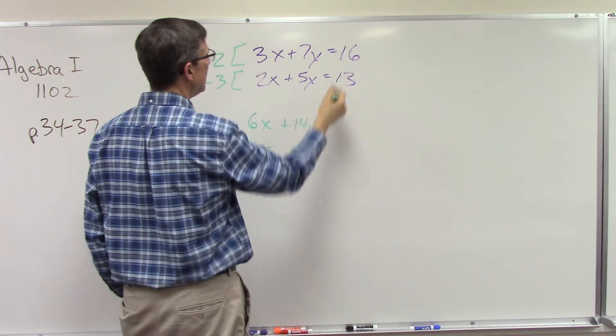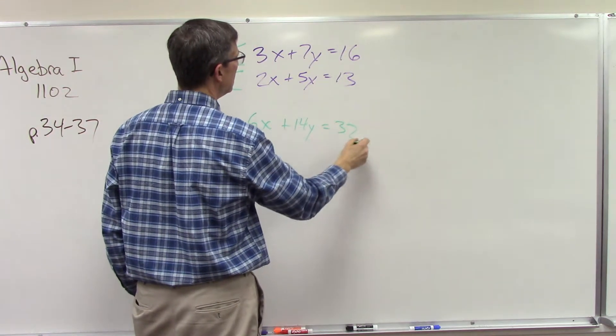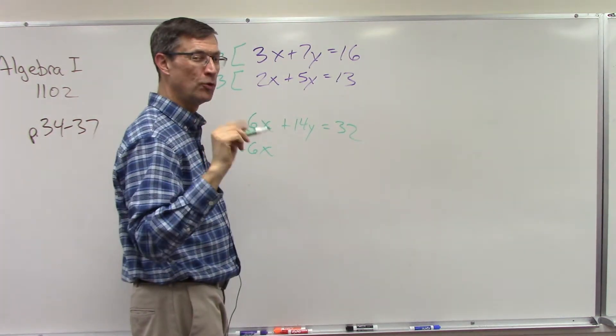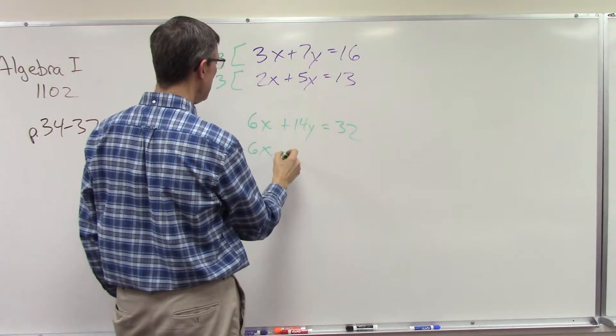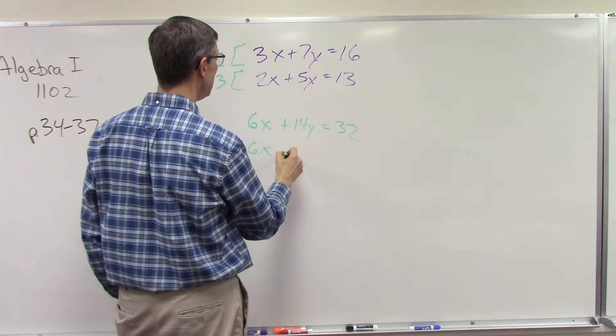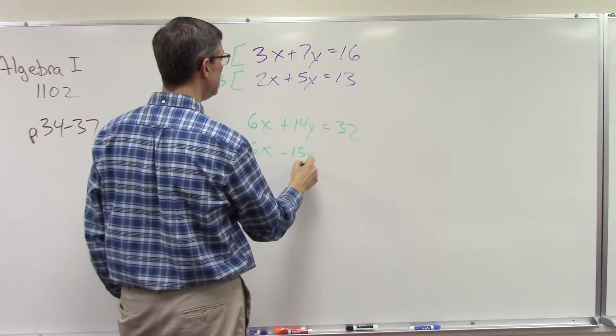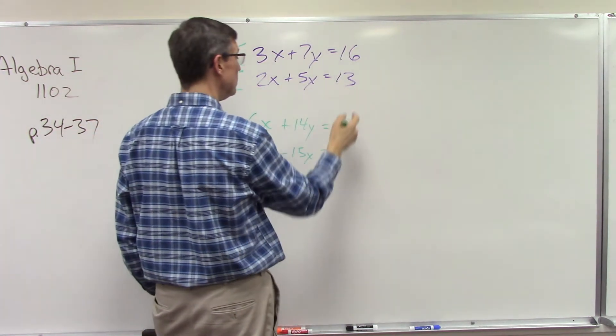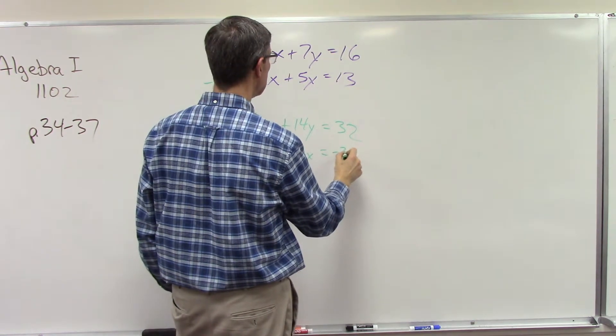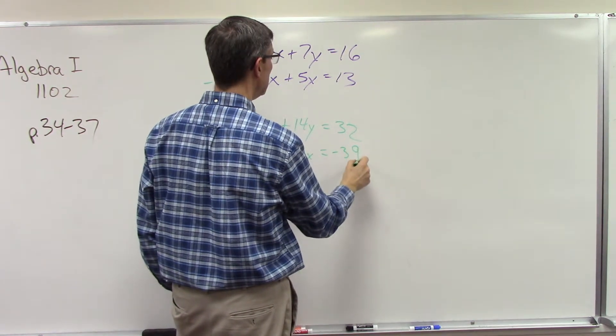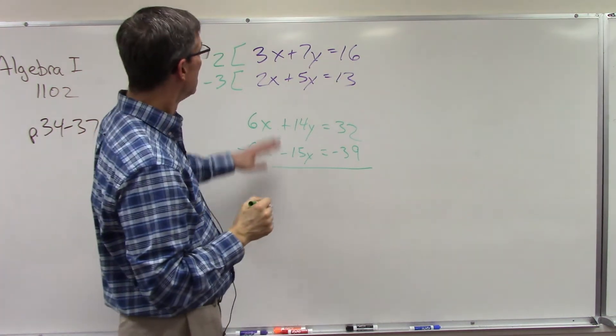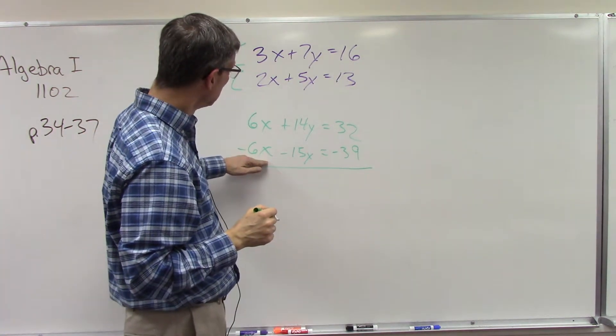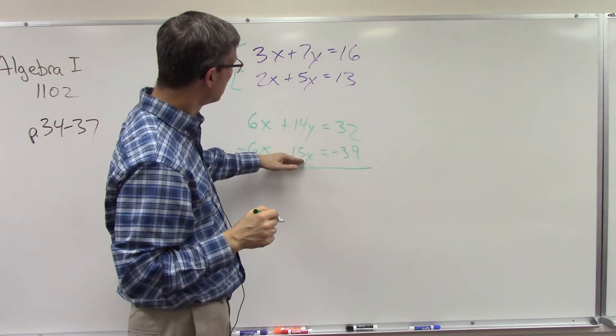Negative 3 times positive 5 would be negative 15y. Negative 3 times 13 is negative 39. And guess what, I'm going to stop there. You can finish it because now you can see that this will cancel. You're going to get x equals something, keep solving and you find x. Once you know x, you can plug it in here and solve this equation to find the corresponding y value.